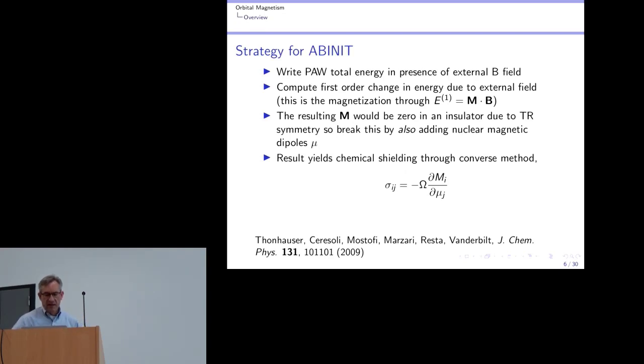Okay, and like I said, I needed also to add a source of non-zero magnetization, so I added magnetic dipole moments as well. And then you can calculate, if you can calculate the magnetization in the presence of magnetic dipoles, you can calculate the magnetic shielding, which is the result of an NMR experiment, which is my ultimate target here. So this converse method is explained in this paper by Thonhauser and colleagues.